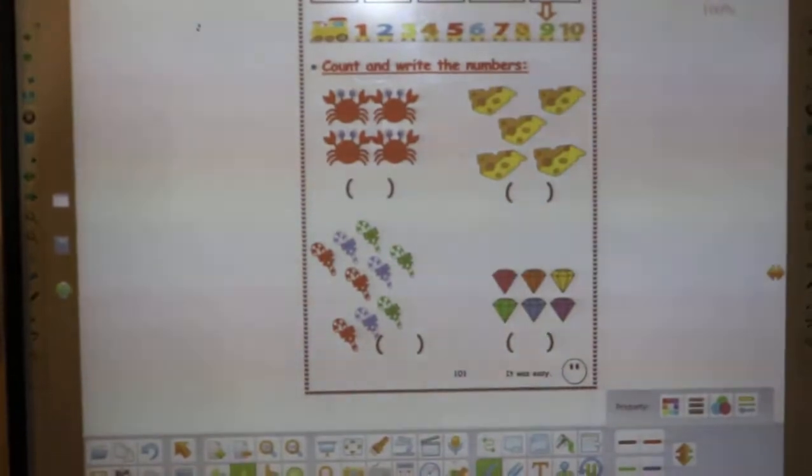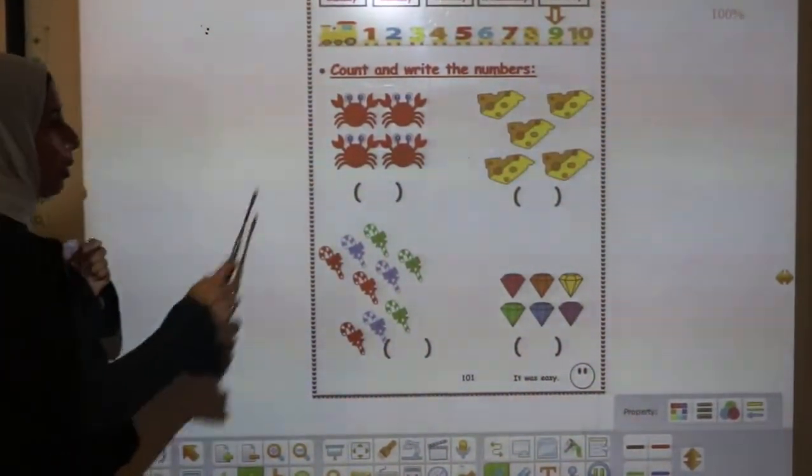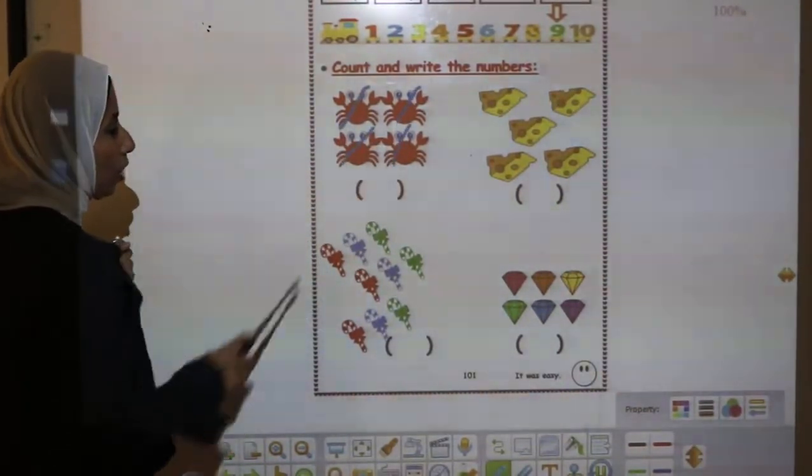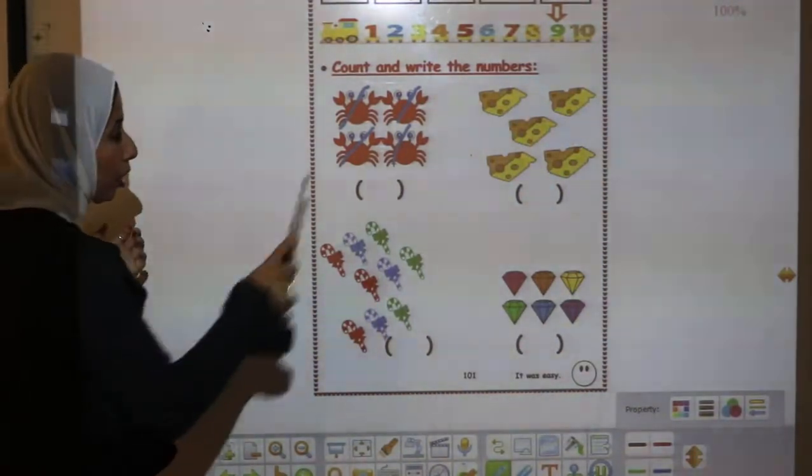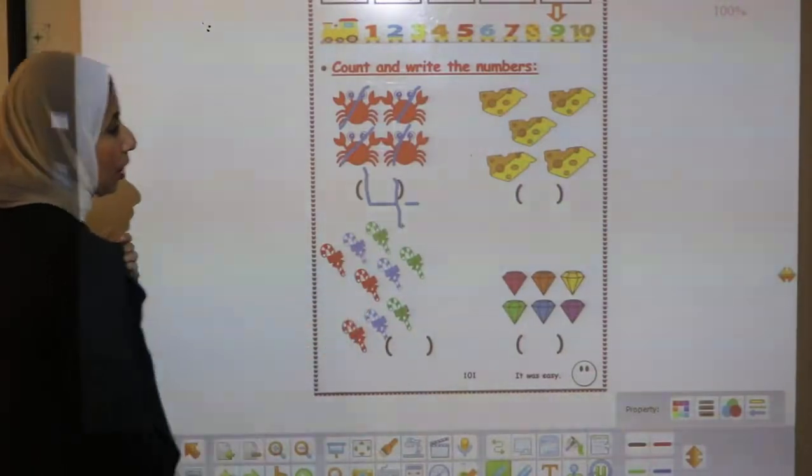Here we will count and write the number. Try to count with me. 1, 2, 3, 4. So, I will write number 4. How can I write number 4? Stick down, sleeping dash, stick down.